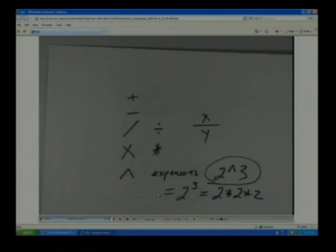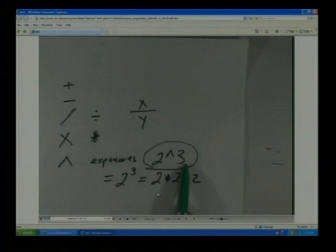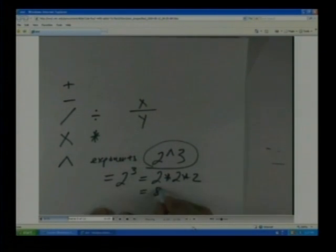And then for exponents, we'll use the housetop or the caret. So 2 raised to the third is the same as 2 to the third here, which is 2 times 2 times 2. That of course is 8.